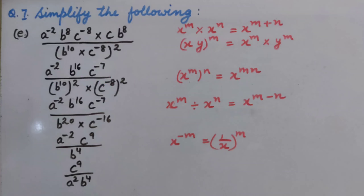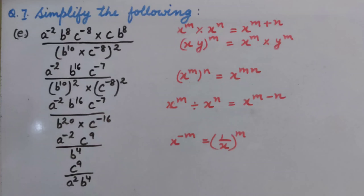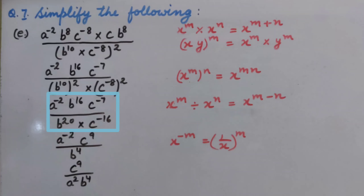Now, powers on power. So we get A raised to the power minus 2, B raised to the power 16, C raised to the power minus 7 upon B raised to the power 20, multiplied by C raised to the power minus 16.